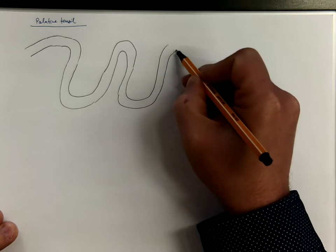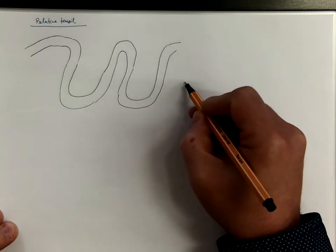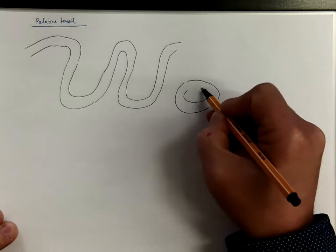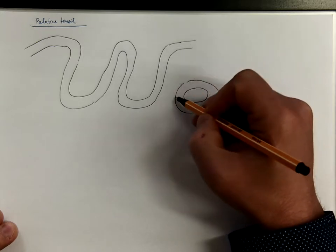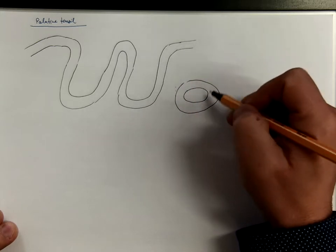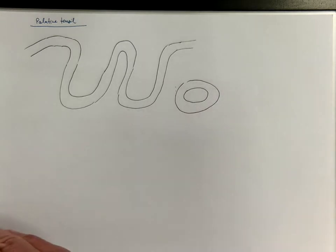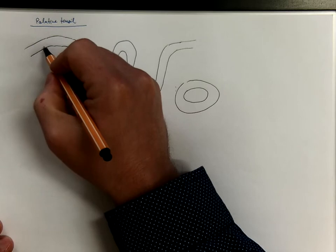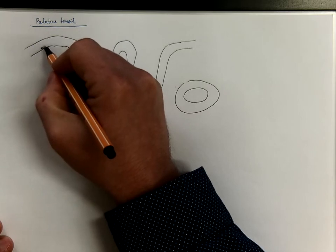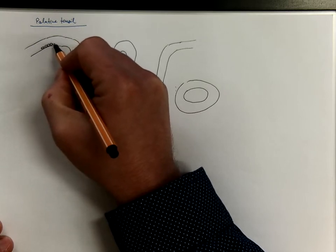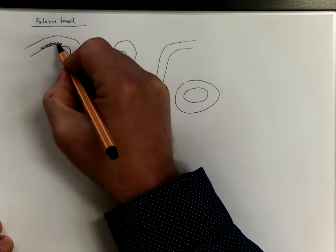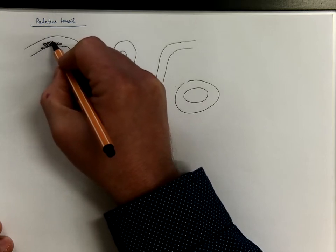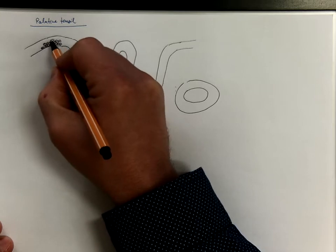Sometimes you can find the bottoms of these crypts also on cross-sections, like here, where you really don't see the connection to the surface, but there is in the three-dimensional space. The epithelium is the same as in the pharynx, so it is a stratified squamous non-keratinized epithelium.